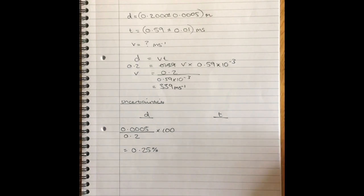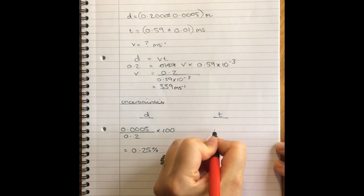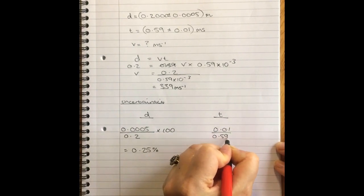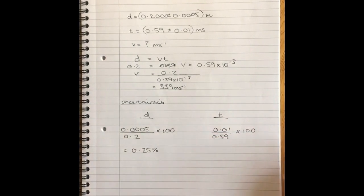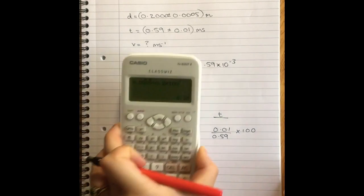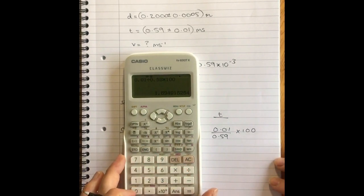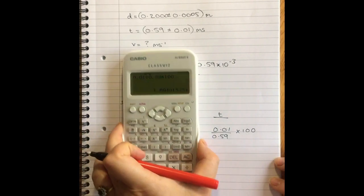So 0.0005 over 0.2 times 100. And that gives me 0.25%. And then for time, I have 0.01 over 0.59 times 100. And now I have 2%.